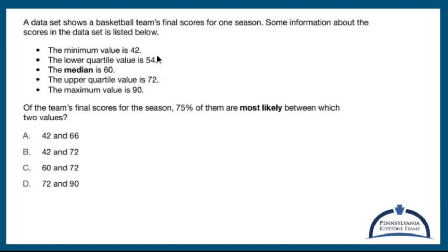The lower quartile value is 54, median is 60, upper quartile is 72, and then the maximum value is 90. So, before I even look at this,